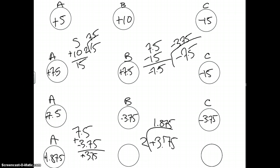And B is still the same, which is negative 3.75, and our remaining C, which is now 1.875.